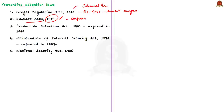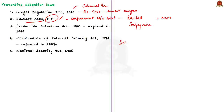For the Rowlatt Act, Mahatma Gandhi organised the Rowlatt Satyagraha, and it was also a major reason for starting the Non-Cooperation Movement. It is very unfortunate that the provisions against which we fought during the freedom struggle are still existing in independent India, though in a mild or less severe form.